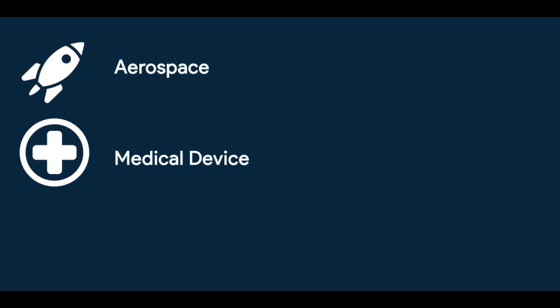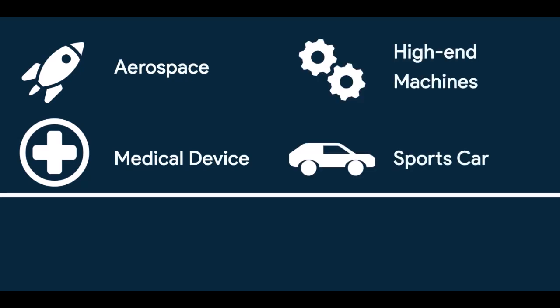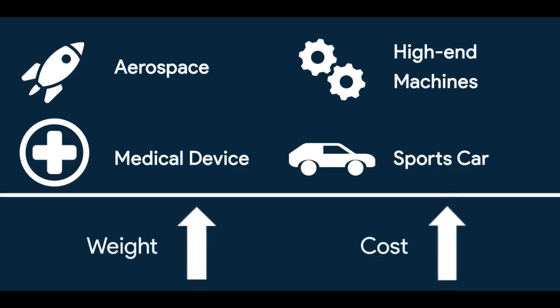But in some applications, getting exact numbers is really important, like aerospace industry, medical device industry, or high-end machinery, or even in sports cars, where just adding some extra material for strength can add unwanted weight and also increase the cost, which can create other problems. So for that, you need accurate numbers. Now how to calculate that is what we gonna find next.